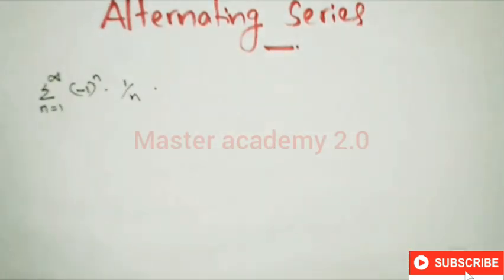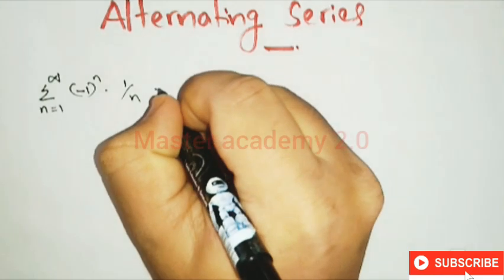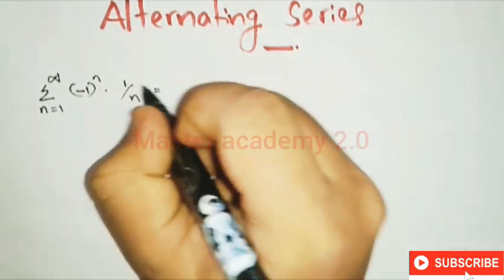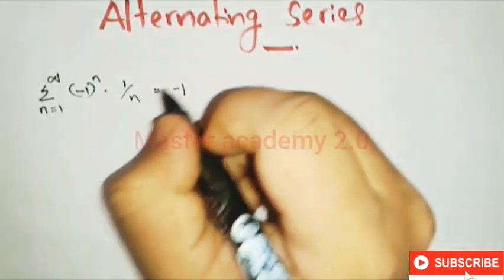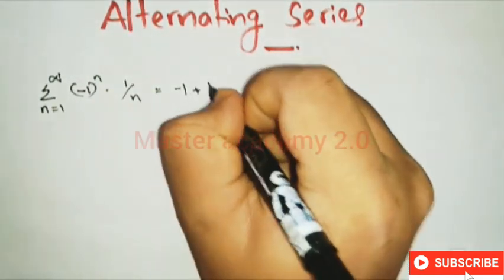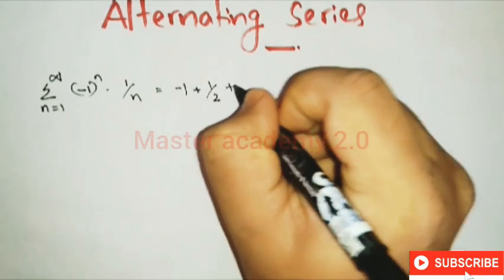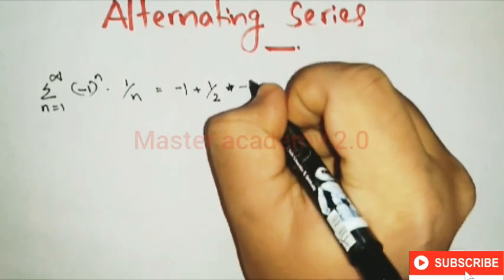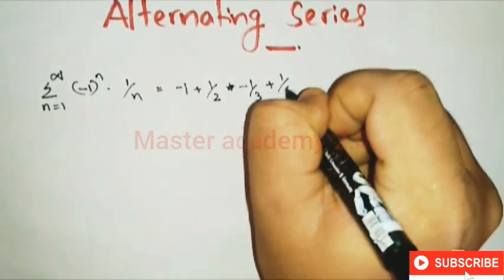We will call n equal to 1 and find the value. First term: minus 1 raised to 1, so minus 1. Second term: n equal to 2, so plus 1 by 2. Third term is minus 1 by 3. Fourth term is plus 1 by 4.